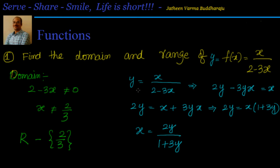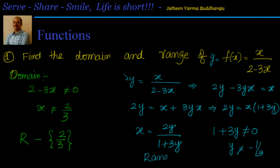We set f(x) = y to find the range. The range comes from the values of y, and the domain from the values of x. Now we found x = 2y / (1 + 3y). We know that x is not defined if 1 + 3y = 0, so 1 + 3y cannot equal 0. That means y cannot equal -1/3. So the range is R minus {-1/3}.